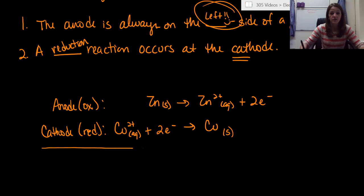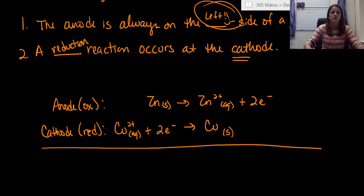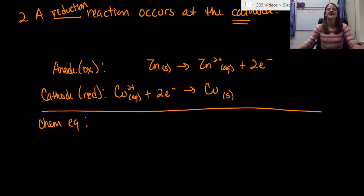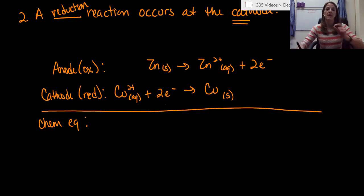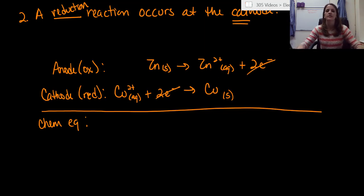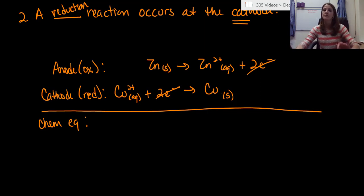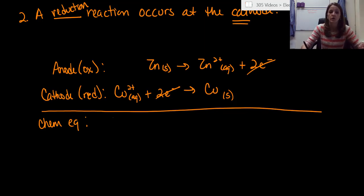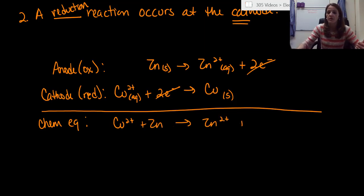Add these two half reactions together to get a total chemical equation. First, make sure electrons cancel — two electrons on the reactant side, two on the product side, good. Zinc zero and zinc 2+ are not the same; copper 2+ and copper zero are not the same. So we get: copper 2+ (aq) + zinc (s) → zinc 2+ (aq) + copper (s).